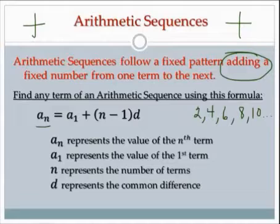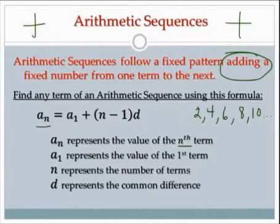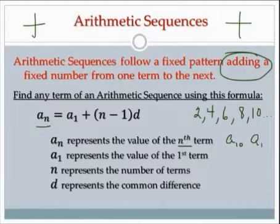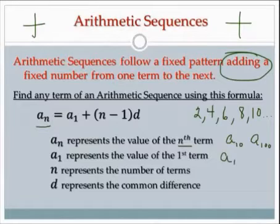You will be given the formula, and you'll be given brief descriptions of what the variables mean, but you really have to understand them to put the numbers in the right spot. A sub n is the nth term of the sequence — nth term just means any term you want. If I want term number 10, that's a sub 10. a sub 100 is the 100th term. n can be any number — it's whatever number of term you're looking for. a sub 1 is always the first term. n represents the number of terms, so if I want to go out to the 100th term, n is 100.